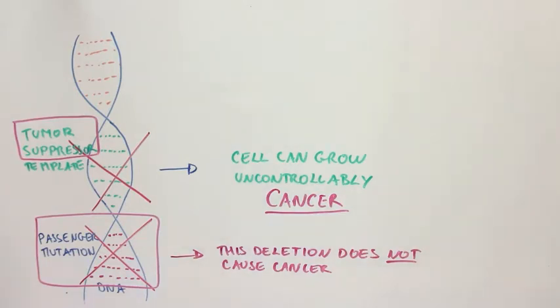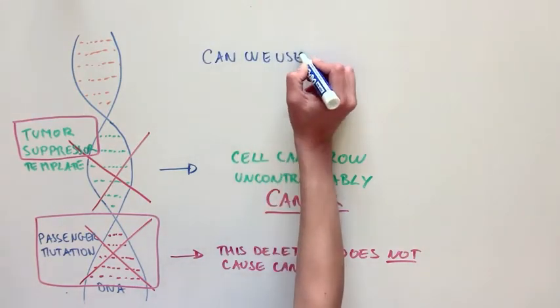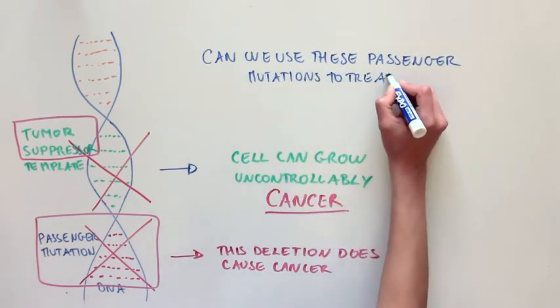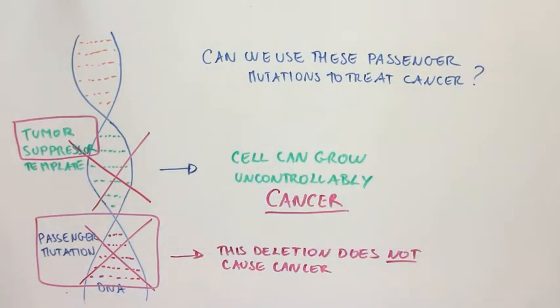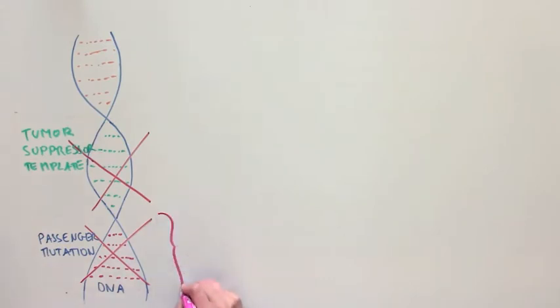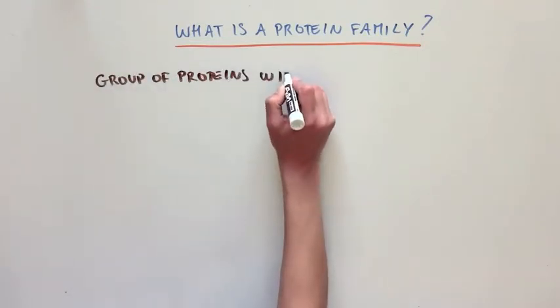So, from a therapeutic standpoint, how can we use these passenger mutations to treat cancer? Well, it turns out that these templates that are accidentally deleted along with tumor suppressors are actually part of protein families, which are groups of proteins with redundant functions.